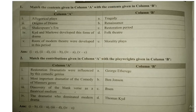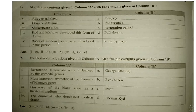Based on the topic, Question 1: Match the contents. Column A — Allegories play, Origin of drama, Shakespeare era, Kidd and Marlowe developed this form of drama, Roots of modern theatre developed in this period. Answers: Allegories play is also known as morality play. Origin of drama started from folk theatre. Shakespeare's era is known as the Renaissance period. Kidd and Marlowe developed tragedy. Roots of modern theatre were developed in the Restoration period.